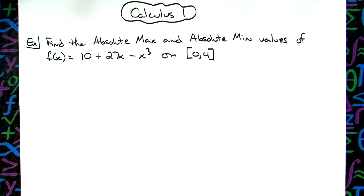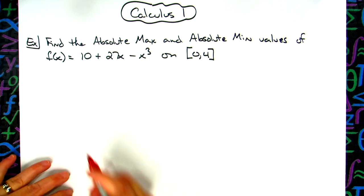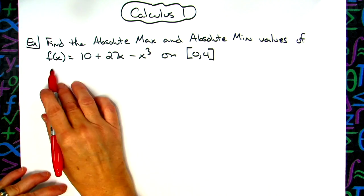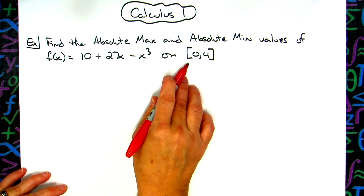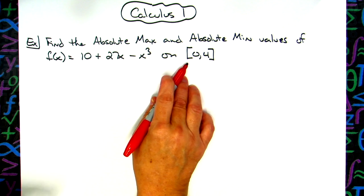All right, in this problem we're going to take a look at finding the absolute max and absolute min values of this polynomial curve on the closed interval from 0 to 4.